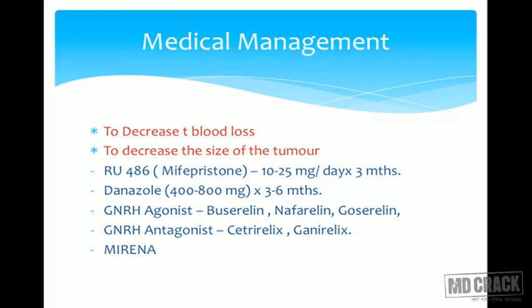The main aim of medical management is to decrease blood loss — either while planning for surgery, to build the patient's hemoglobin and make her fit for surgery, or to decrease the size of the tumor before surgery so the myomectomy can be done more easily with less damage to the myometrium.